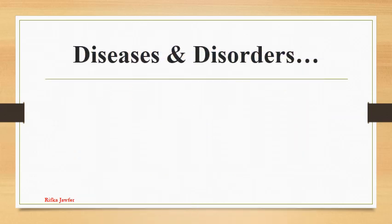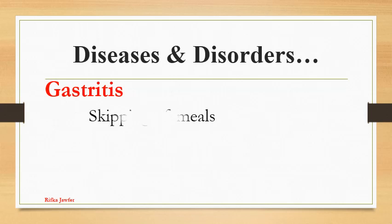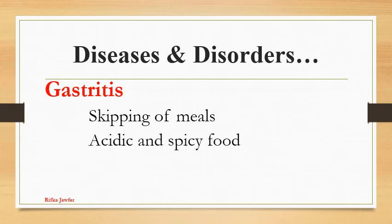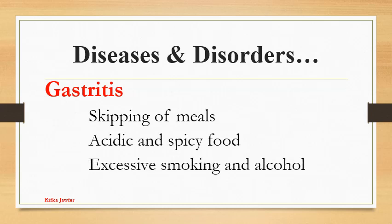Now let us see the diseases and disorders related to the digestive system. First is gastritis. Inflammation of the inner lining of the mucosa of the stomach is called gastritis, also known as acidity. The main symptoms are regurgitation of acid to the mouth, burning feeling and pain in the stomach, and in worse conditions may cause ulcers and bleeding. The reasons for gastritis are skipping of meals, consumption of acidic and spicy food, excessive smoking and alcohol consumption, and mental stress.